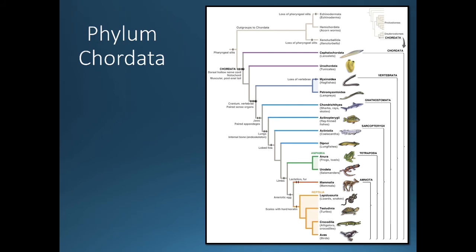Now let's move to the phylum Chordata. All chordates share certain synapomorphies, and as they evolved, various adaptations unified subgroups — developing a cranium, vertebrae, paired sense organs, jaws, lungs, lobed fins, and limbs giving rise to amphibians, mammals, and reptiles. The amniotic egg developed and was incredibly important for the evolution of mammals and reptiles. We'll return to discuss many of these groups over the next day or two.